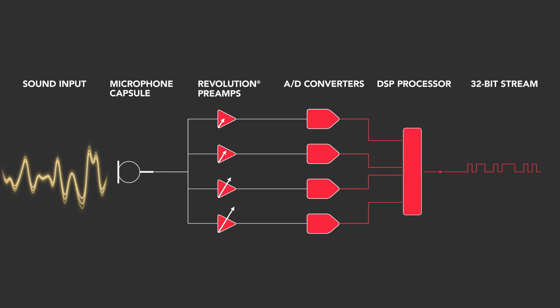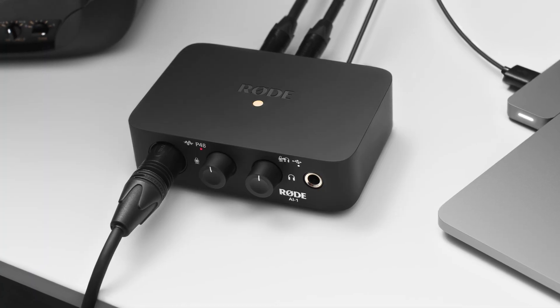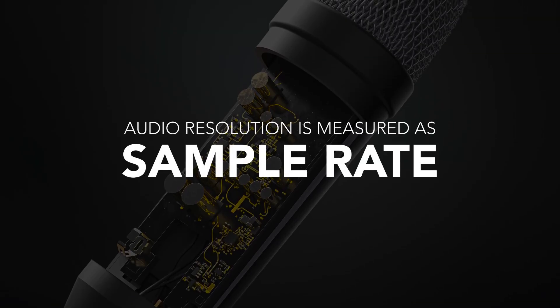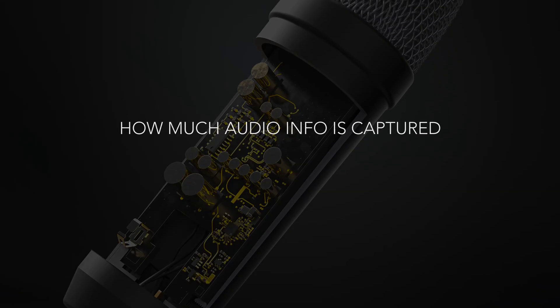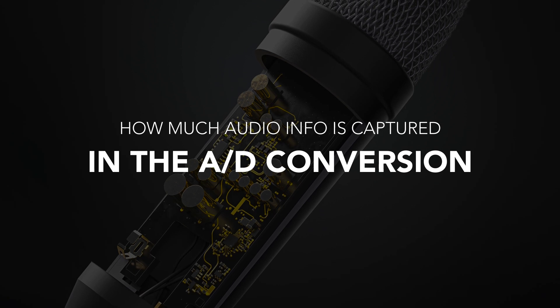This process is simply known as analog to digital conversion and it's one of the main functions of a standalone audio interface such as the Rode AI1, for example. Now different audio interfaces are capable of capturing and outputting audio at different resolutions, which is measured in a figure that is known as a sample rate. You may have heard this term before — it is essentially how much audio information is captured in the analog to digital conversion process.